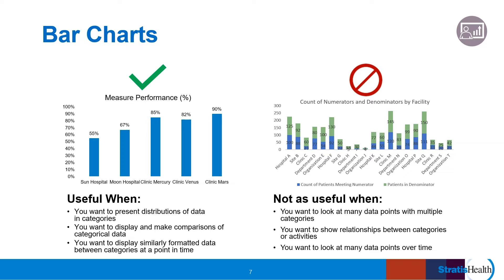Bar charts are used to compare categories of observed data. Bars can be reordered in bar charts, but not histograms — recall that histogram categories are sequential. Typically, the bars of bar charts have the same width, as the focus is on the height or y-axis. In the example on the left, the categories represent five separate facilities within a health system. The order in which you display the bars depends on the story you are telling your audience. In this example, the bars are ordered based on the population size of each facility — Sun Hospital on the left has the largest patient population, and Clinic Mars on the right has the smallest.